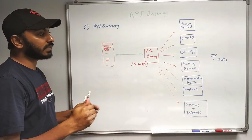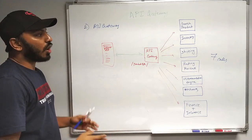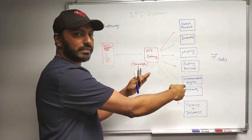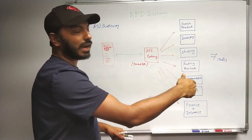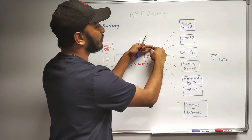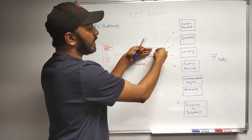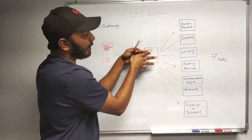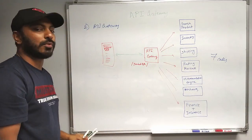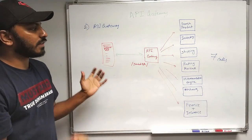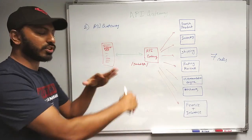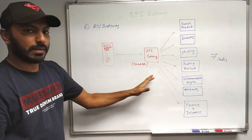If there are use cases where you have to make two serial calls one after another because of some dependency, you can configure all of that in the API Gateway. For example, first call the search product, and based on the information received, make the remaining six different calls once that first call is finished. There are many other advantages to using API Gateway which I'll talk about after this. The API Gateway sits in between the client and the microservices and acts as a gateway for all of them.